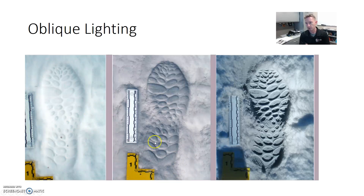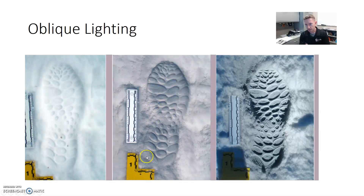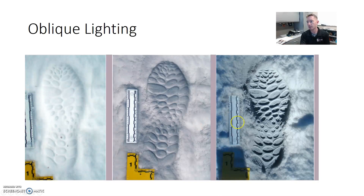Trying some different options with oblique lighting — this one is a little too dark with shadows, but with the light source coming across it, we're getting a nice detail. Sometimes you've got to play around with the oblique lighting. Maybe one or two flashlights are needed so that you don't cast such a heavy shadow, or use a flashlight and your external flash unit together.